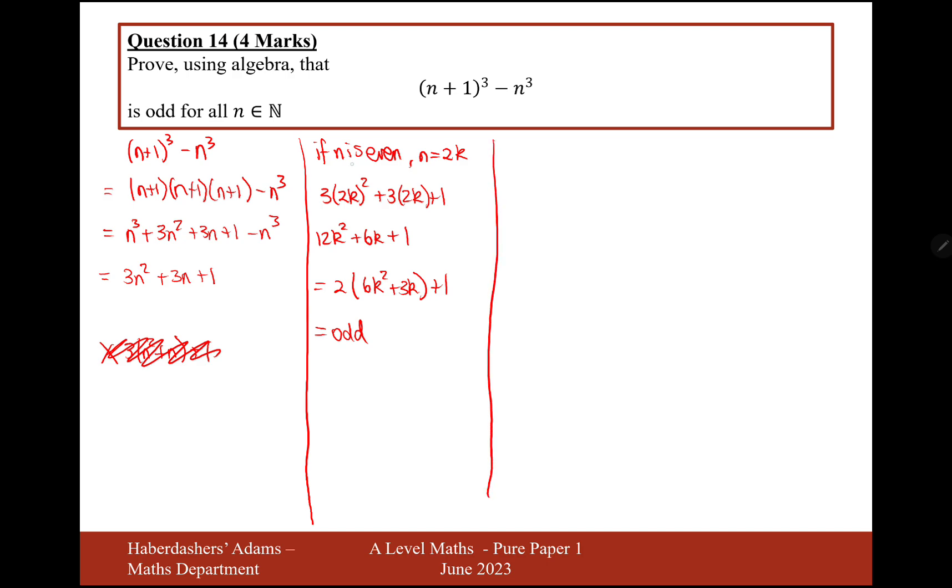We've proved that the rule works when n is even. Now we're going to prove the rule when n is odd. And then n can be represented by 2k plus 1. So then it goes 3 brackets 2k plus 1 squared. Add 3 lots of 2k plus 1. Add 1.